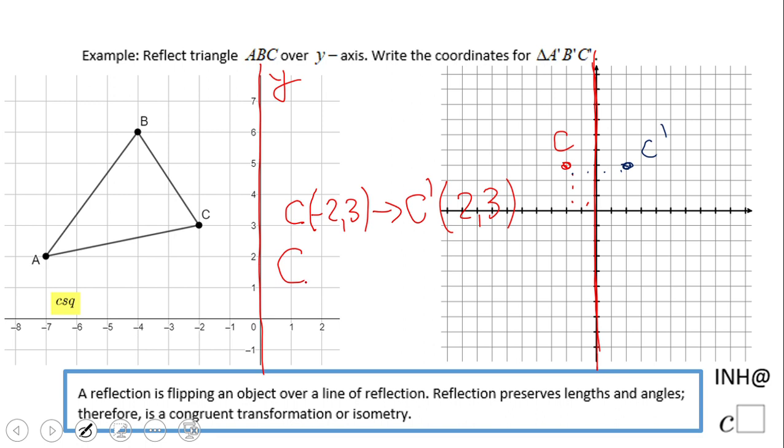If we have C at (x, y), then C prime is at (-x, y). So you see the x is the one that switches. This is the rule we can use for the other points.